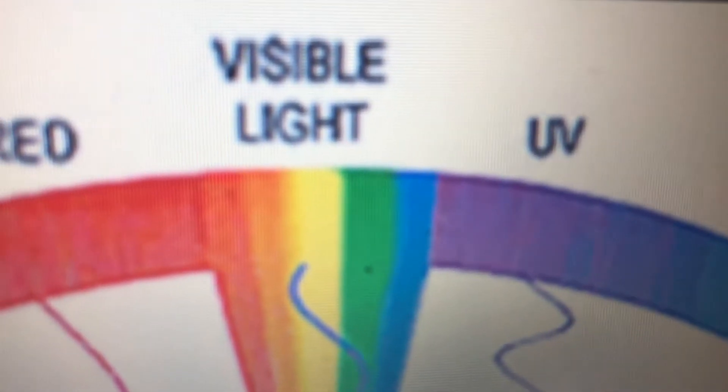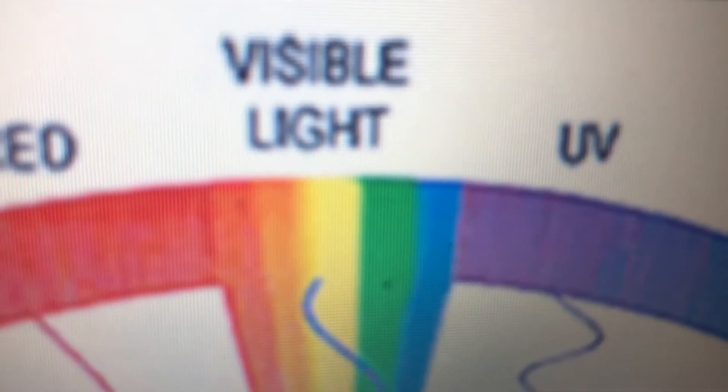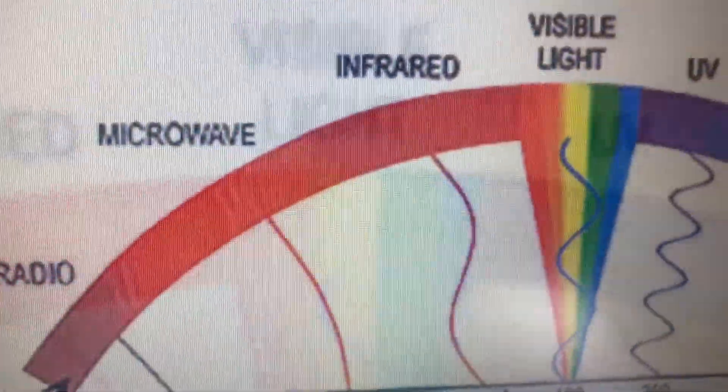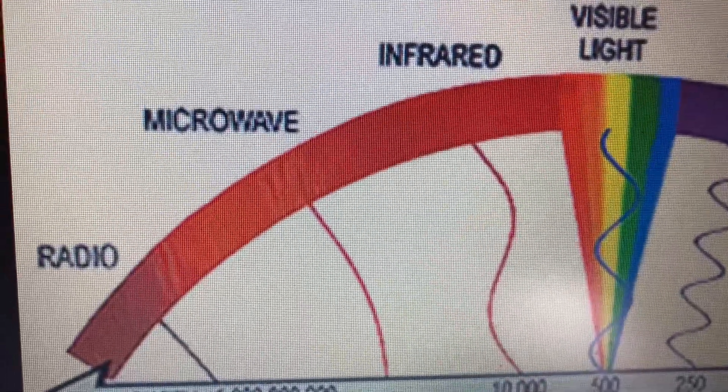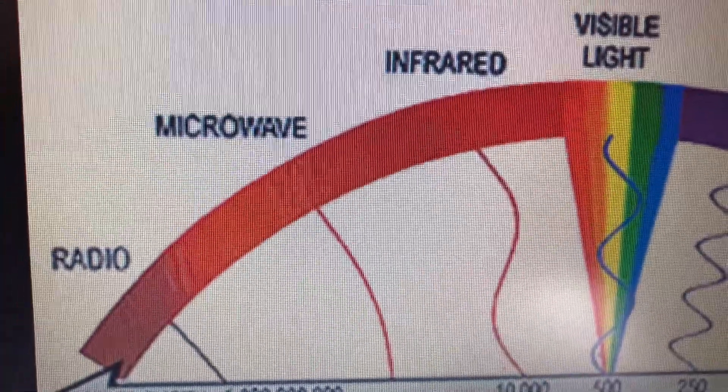We can see which are the colors of the rainbow: red, orange, yellow, green, blue, indigo, violet. Today, we do not want to talk about, explore, or discuss visible light. We want to explore the waves that the human eye cannot see, but that we know are there.